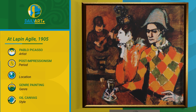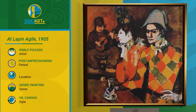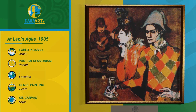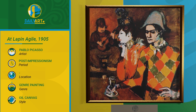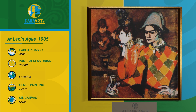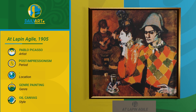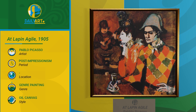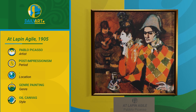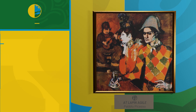Overall, the painting captures the bohemian and lively atmosphere of Montmartre's cabaret scene and provides a glimpse into the world of artists, performers and thinkers who frequented At Lapin Agile at the time. Picasso's unique and expressive style brings each character to life and invites viewers to interpret the emotions and interactions depicted in the artwork.